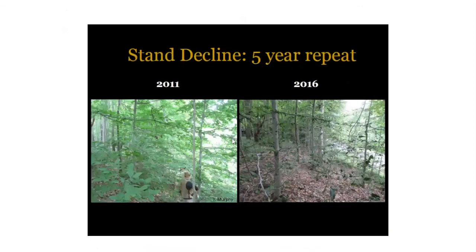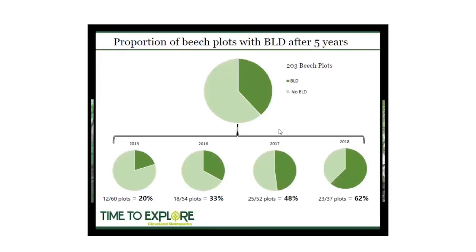So what can this do to a forest? Cleveland Metroparks runs a very intensive vegetation research program with over 400 research plots throughout the Metropark system, sampled on a five-year repeating cycle. This is a picture of a beech-maple forest in 2011 when the program began, and five years later in 2016 you can see the decimation this disease caused on this particular stand. Back in 2015, out of 60 plots sampled, 12 had beech leaf disease. A whopping four seasons later, 62% of all plots had beech leaf disease present — an exponential increase on the landscape.